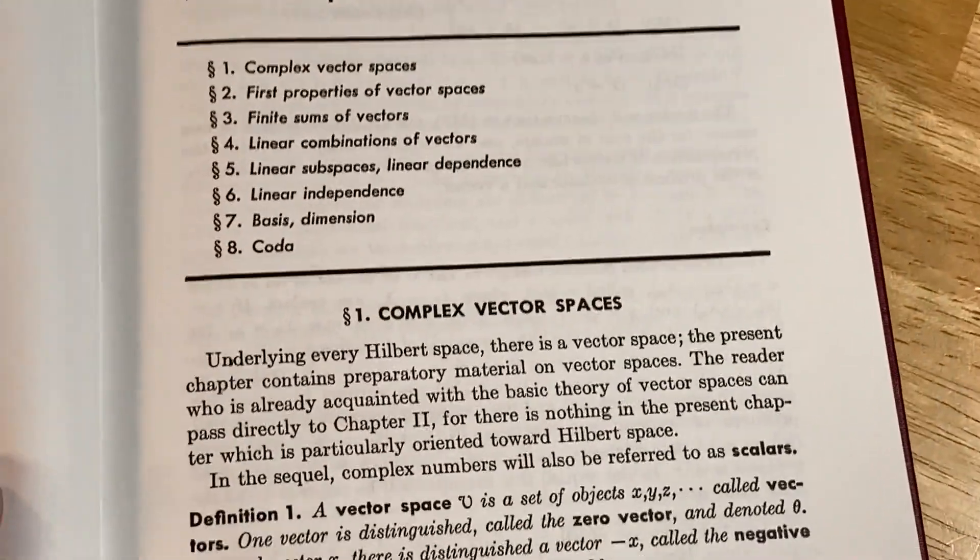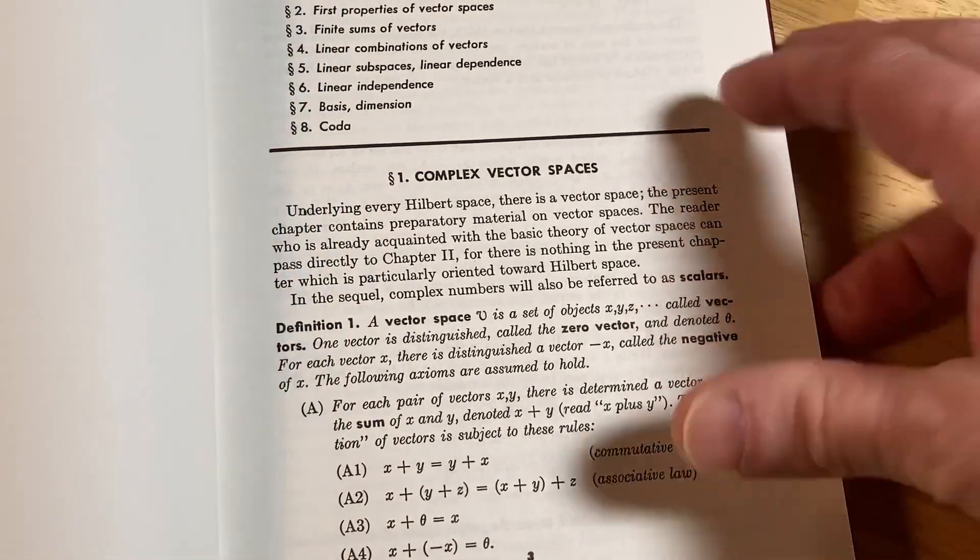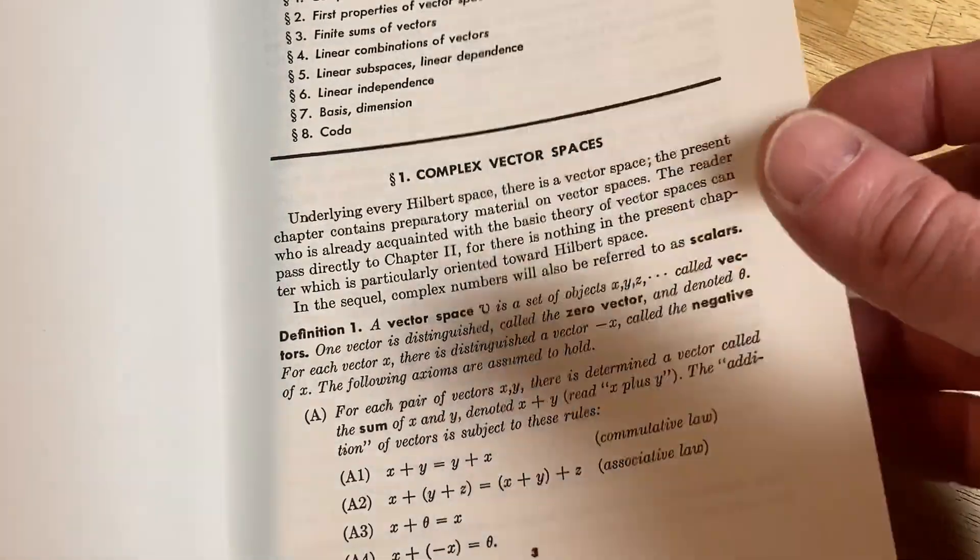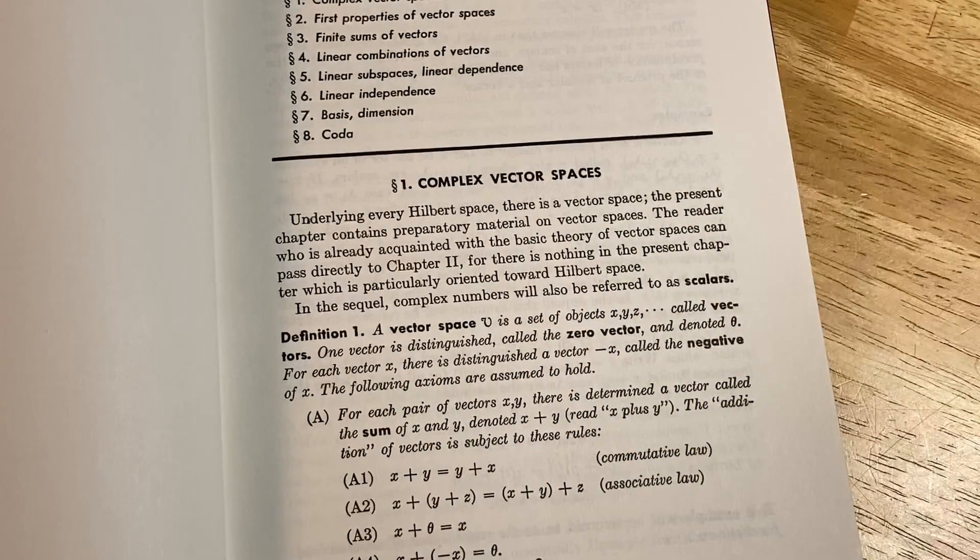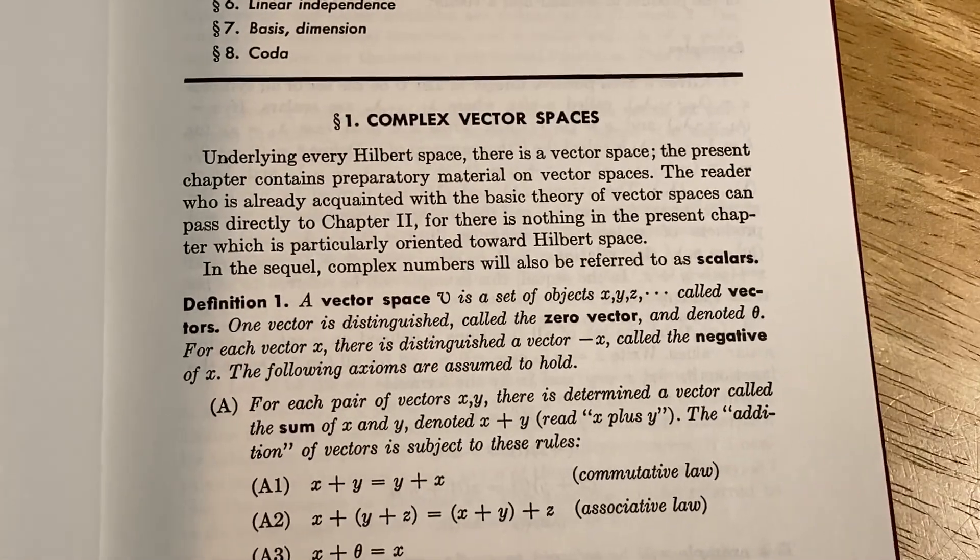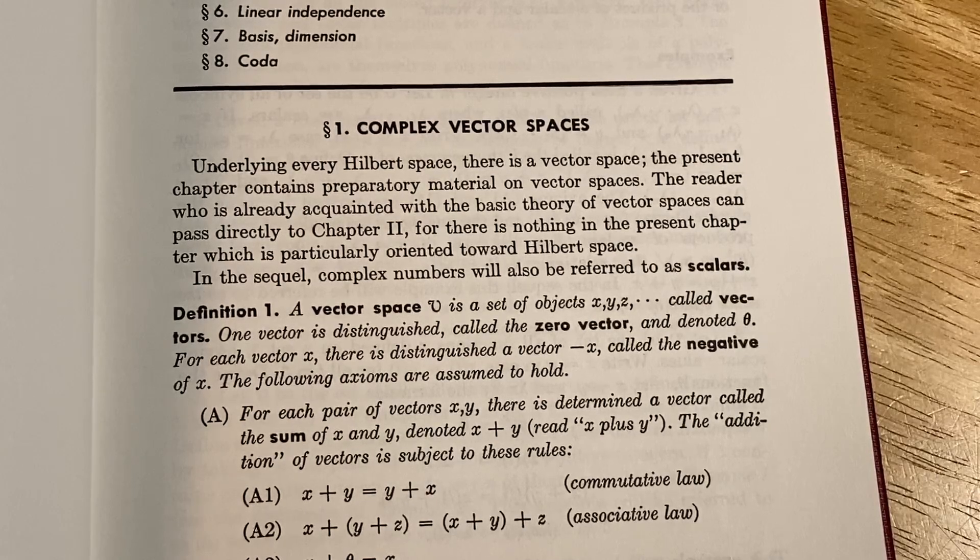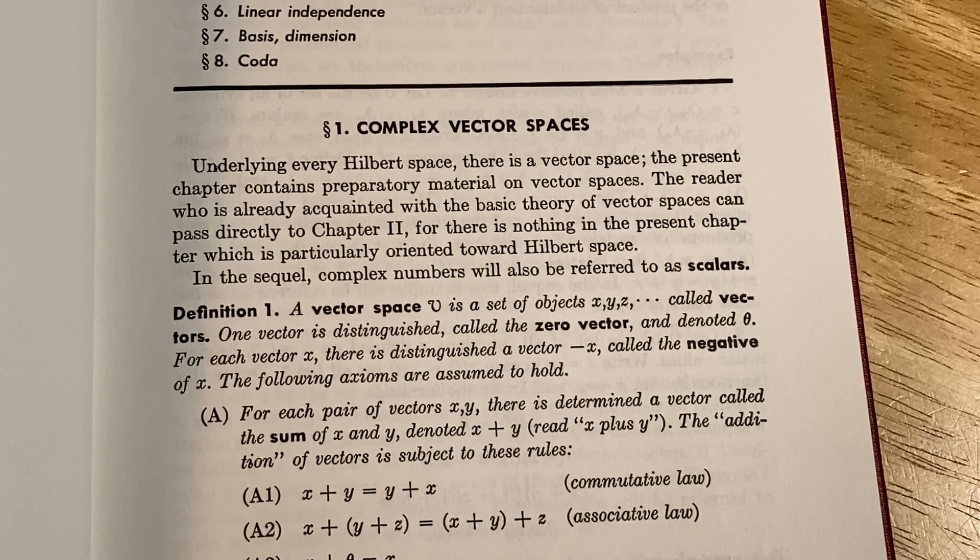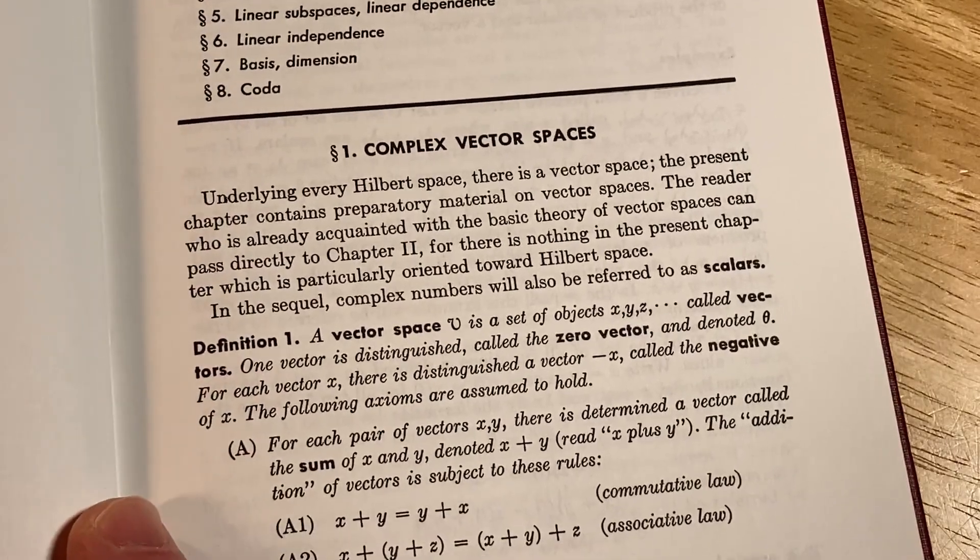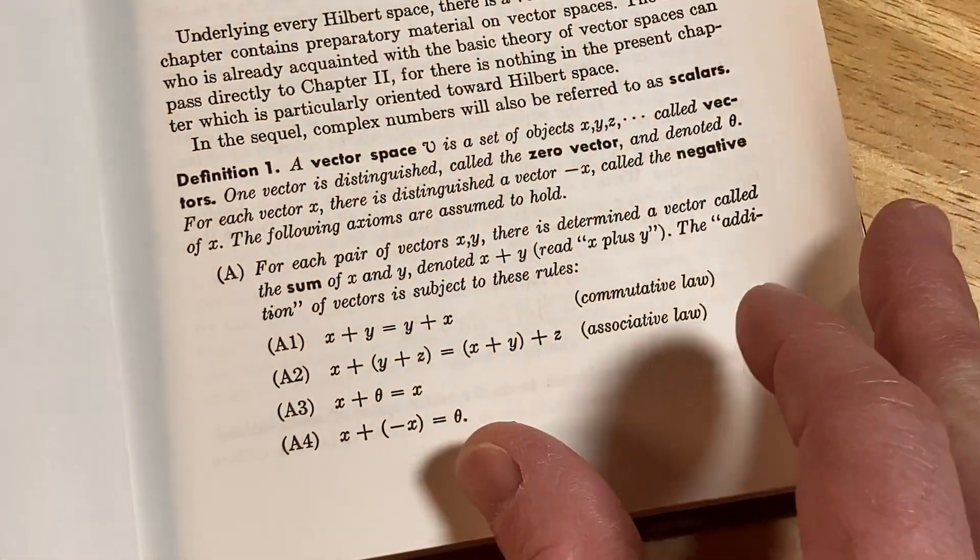Introduction to Hilbert space. So here's how it starts. Ideally, before you study this, you want to have some algebra. You want to know abstract algebra. This is not going to be your first introduction to vector spaces. Ideally you already know some stuff, right? So you know how to write proofs and stuff. Underlying every Hilbert space, there is a vector space. The present chapter contains preparatory material on vector spaces. The reader who was already acquainted with the basic theory of vector spaces can pass directly to chapter two. For there is nothing in the present chapter which is particularly oriented toward Hilbert space. In the sequel, complex numbers will also be referred to as scalar. So here it talks about vector spaces.